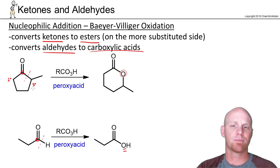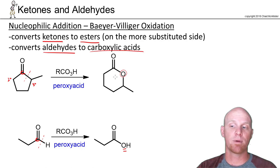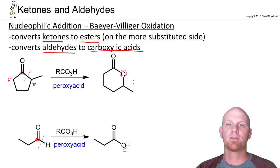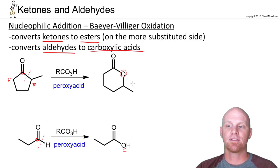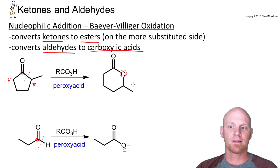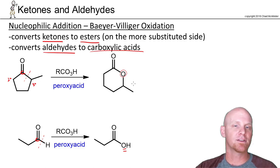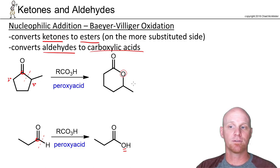I chose this example because it's easy to see. In this case, we're going from a five-membered ring to a six-membered ring, but again, there's nothing that says this has to involve a ring at all. Now let's take a deeper look at the mechanism for the reaction converting the ketone to the ester.